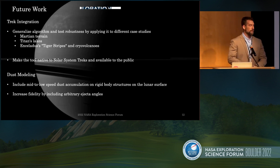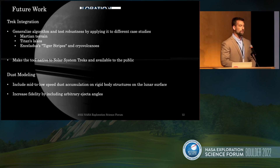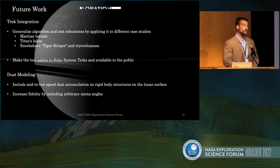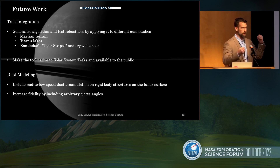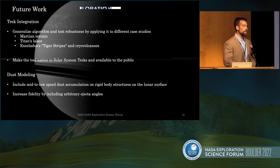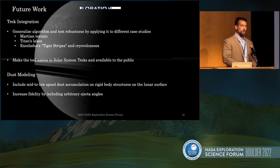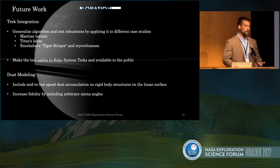For future work, we want to apply this to very different cases — Martian terrain, Titan's lakes, and Enceladus' tiger stripes, which are of special interest due to cryovolcanic activity and modeling impacts on spacecraft trying to gather samples from cryovolcanic plumes. We also want to make the tool native to Solar System Treks so it's available for all bodies, and of course improve the fidelity of dust modeling for our specific case to better understand the impact on Gateway over its lifetime.